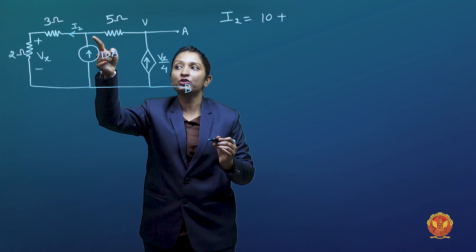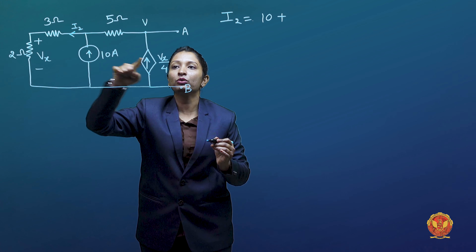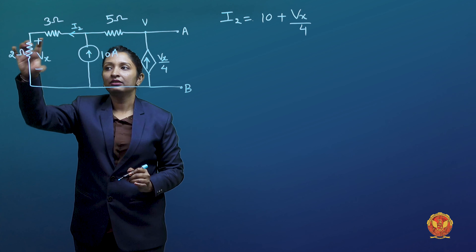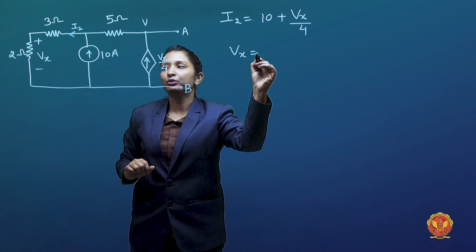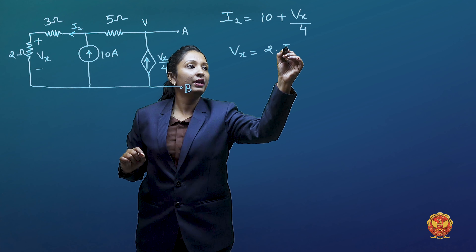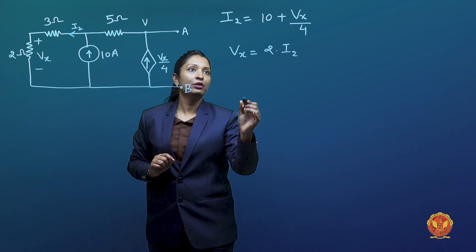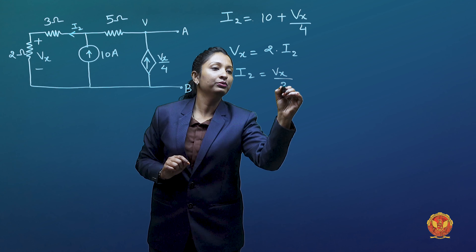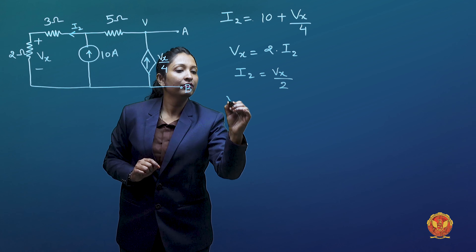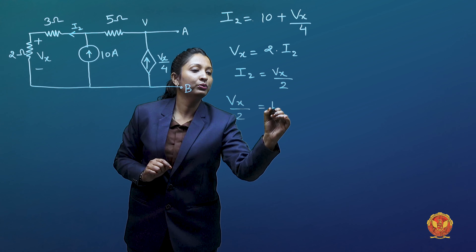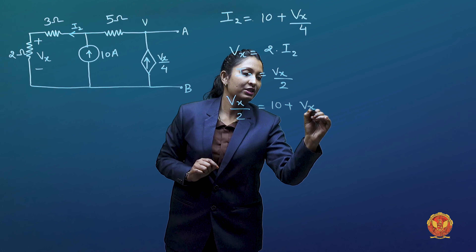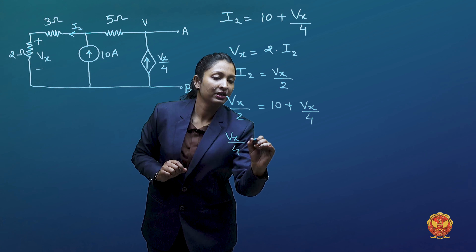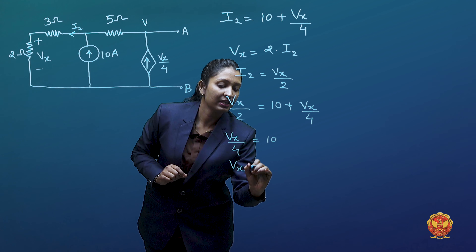Since the terminal is open, I2 equals Vx divided by 4. We know that Vx equals 2 multiplied by I2, so I2 equals Vx divided by 2. Substituting: Vx divided by 2 equals 10 plus Vx divided by 4. Solving this equation gives us Vx equal to 40 volts.